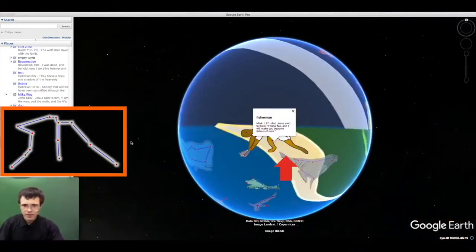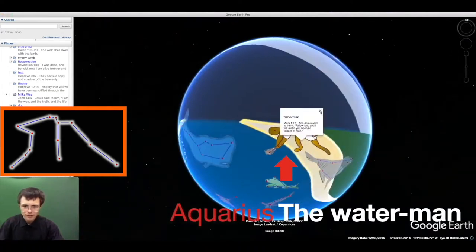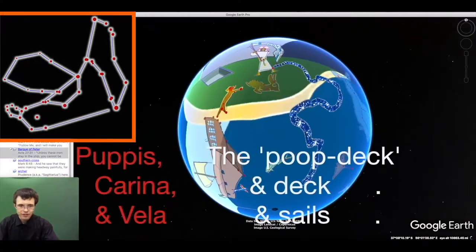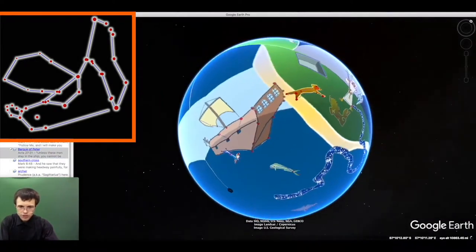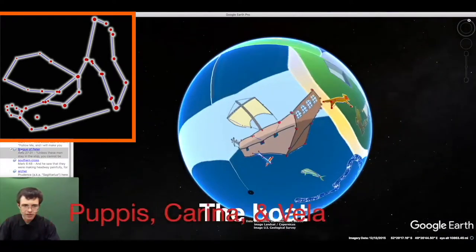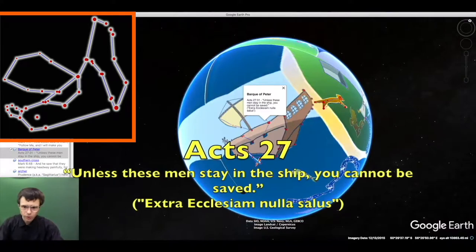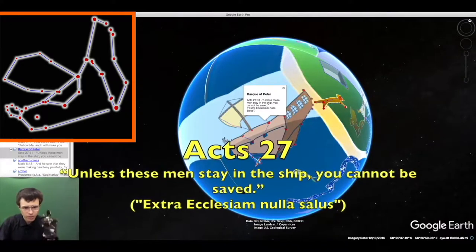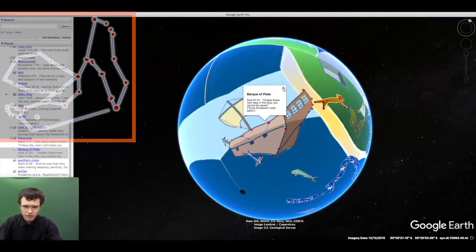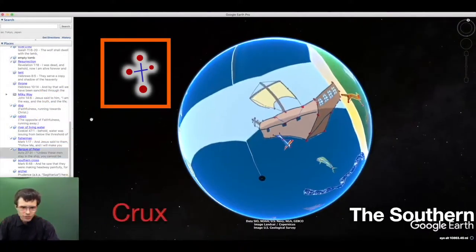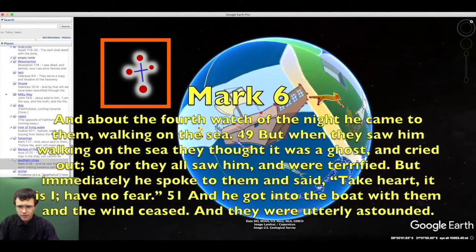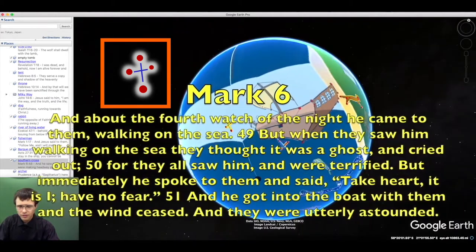And Jesus said to them, Follow me and I will make you fishers of men. And he sent out his apostles, the fishermen, the sailors of the bark of Peter, to go and preach the gospel to all nations. And to baptize them into the one holy Catholic and apostolic church. So that the apostle Paul would say, Unless you stay in the ship, you cannot be saved. So ever after that, the ship has been a symbol of the church sailing upon the waters. But the ship is not alone, for it has the cross to guide it, which also represents the Lord walking on the waters ahead of it.